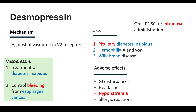To summarize: desmopressin is a V2 receptor agonist used in the treatment of pituitary diabetes insipidus, von Willebrand disease, and hemophilia. Its specific adverse effect is hyponatremia, and it is also administered through the intranasal route. Vasopressin is specifically used in the treatment of esophageal varices to control bleeding.